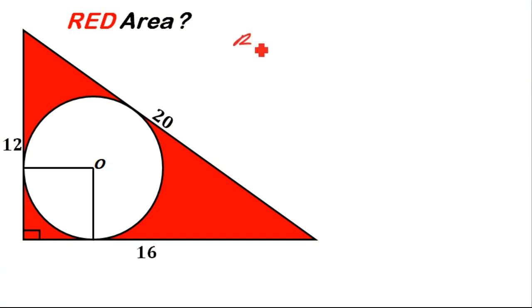Now getting the red area is very simple. The red area will be the area of the triangle. So if we let this to be triangle ABC, then the area of the triangle ABC, a right angle triangle at point B, will be one half base, which is the length from B to C that is 16, times the height which is from A to B that is 12, minus the area of the inscribed circle which is given by pi R squared.